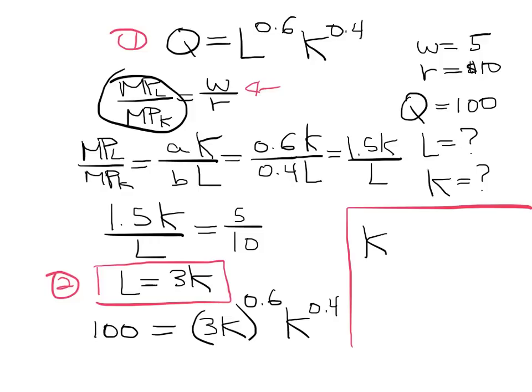K is going to be equal to approximately 52. Once we found K, we know that L equals 3 times K, so L is going to be equal to 156. The cost-minimizing input combination is 52 units of capital and 156 units of labor. This makes sense because labor has a higher output elasticity and is also cheaper, so you use a lot more of it. Capital has a smaller output elasticity and is more expensive, so you use much less of it to minimize costs.